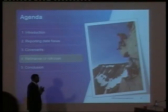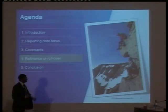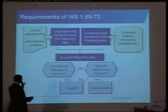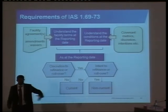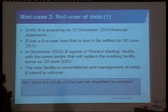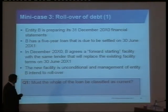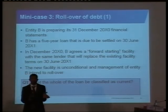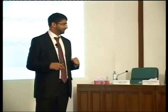Let's talk about rollover and refinancing. If you have the discretion to rollover, the loan is current, but if you have the discretion and the intention to rollover, it's non-current. If you don't have the discretion to rollover, it's current. Entity B is preparing its 31st December financial statements. It has a five-year loan due to be settled on 30th June. In December, it agrees a forward-starting facility with the same lender to replace the existing facility on 30th June. The new facility is unconditional and management intend to rollover. Is this current or non-current? Non-current.